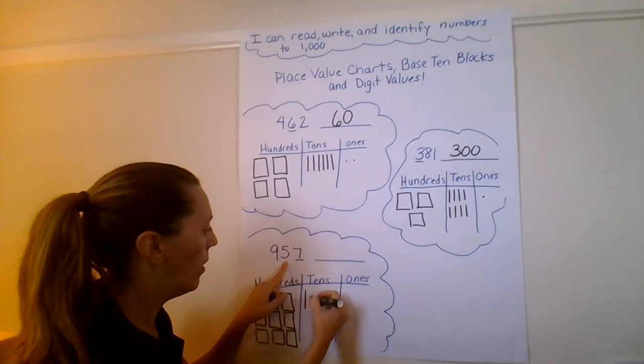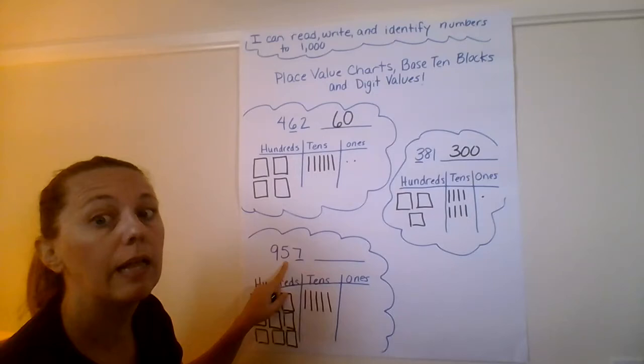How many tens? Five. Good job. One, two, three, four, five tens. Easy peasy, lemon squeezy.